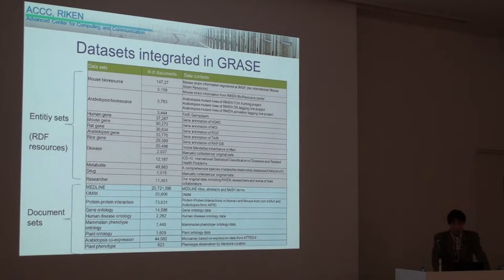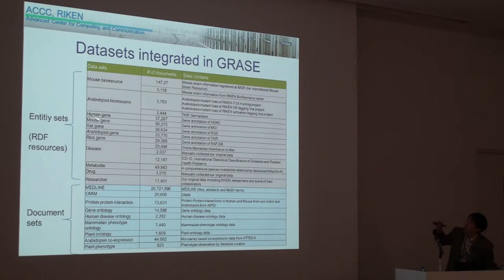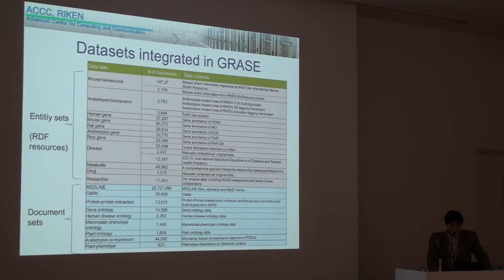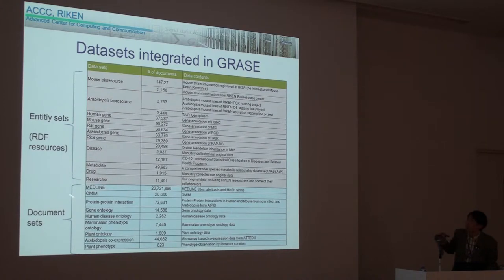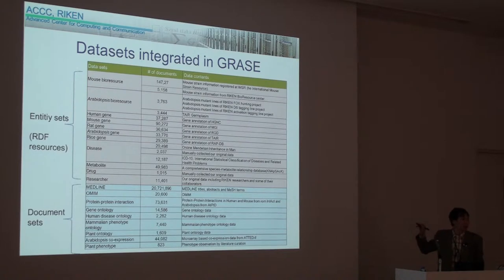The supported data has been extended with various omics data, including mouse and arabidopsis bio-resources, and genes in human, mouse, rat, arabidopsis, and rice, and also disease, metabolite, and drug. The document set includes Medline and Omi. The entities are RDF resources with original semantic web URIs for further omics data analysis using another semantic web data. GRACE can be an entrance of the semantic web.